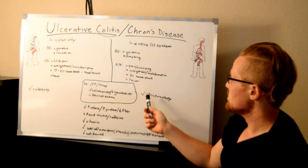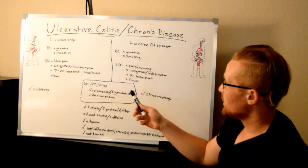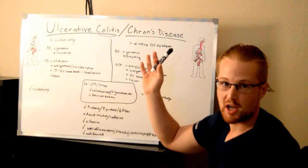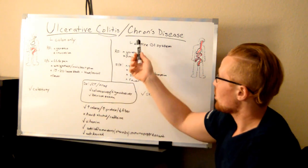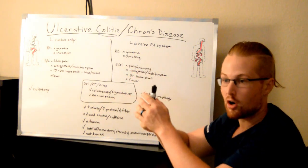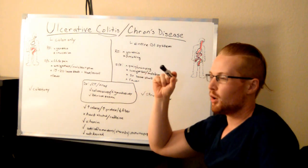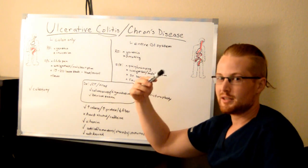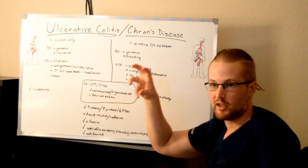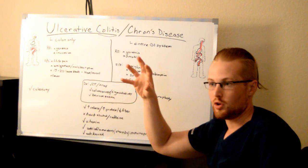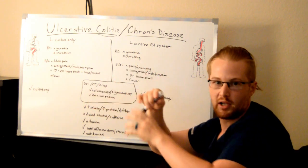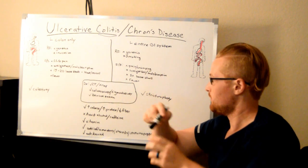With Crohn's Disease, if you remove the colon, the rest of the GI system can still ulcerate or become scarred. So surgery is only done when really necessary — sometimes laparoscopically — to fix or remove the scarred tissues and reconnect the parts that are still healthy.